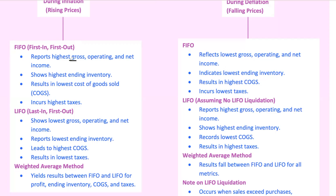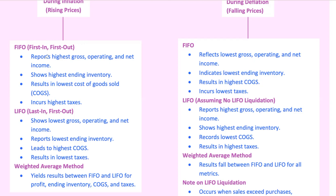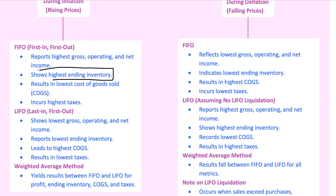With FIFO during inflation, the inventory remaining on the balance sheet is valued at more recent, higher costs. This means you'll typically see the highest gross profit, operating profit, and net income, because the cost of goods sold is lower — thanks to those older, cheaper inventory costs. But there's a trade-off: this method also results in the highest ending inventory value and, consequently, the highest taxes, since profits are higher.